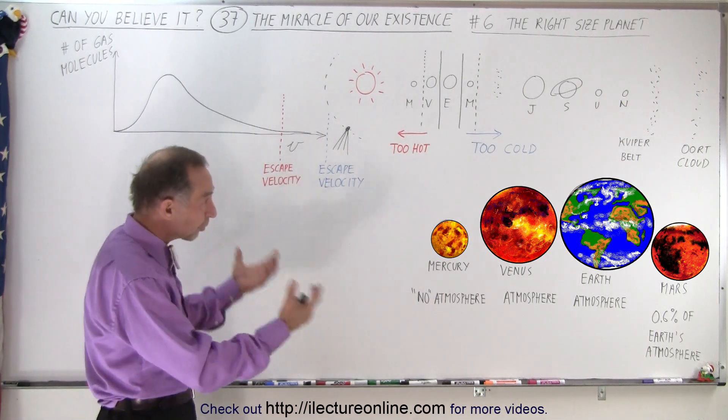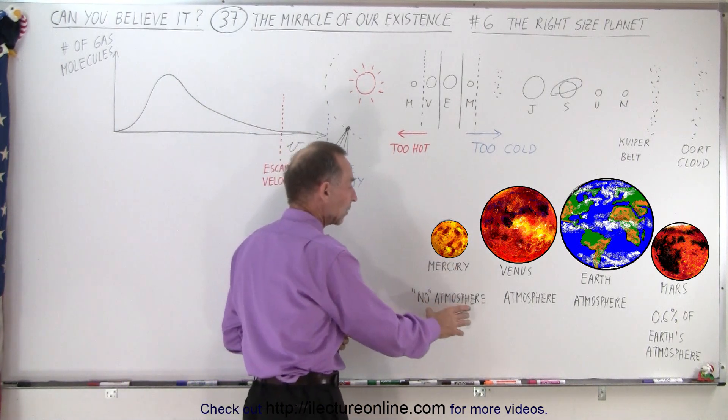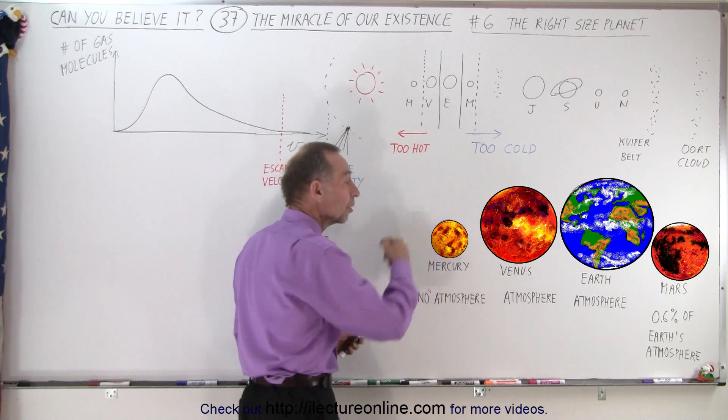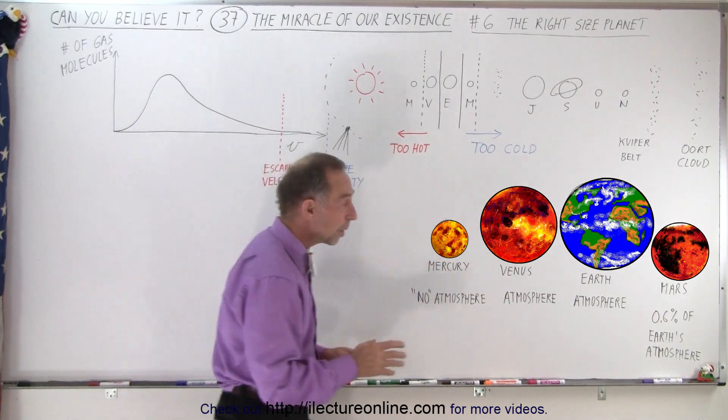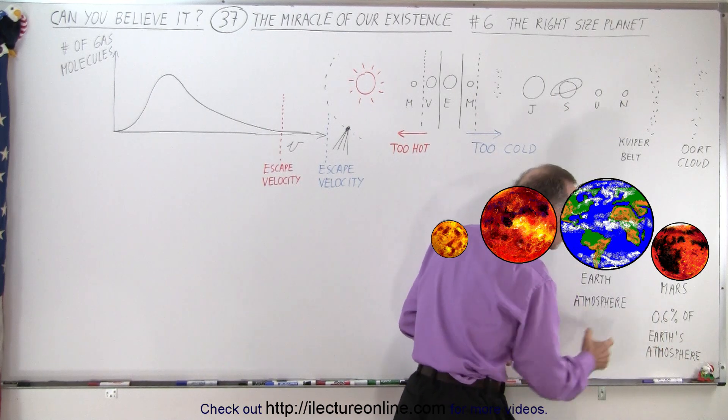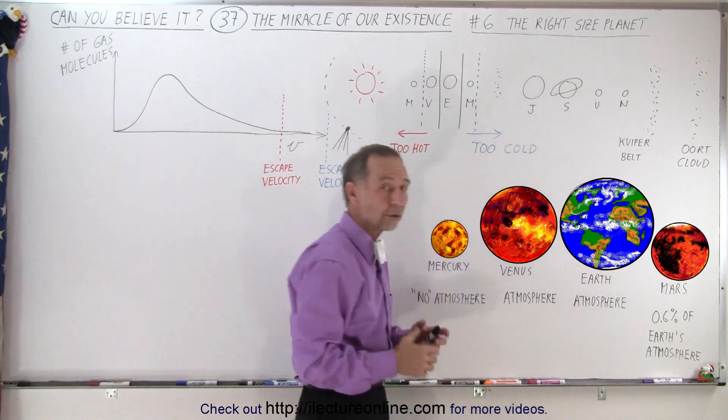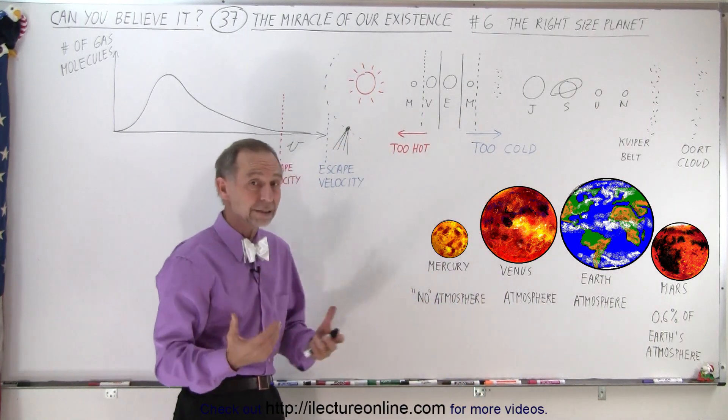So, of the four terrestrial planets in our solar system, notice that Mercury has no atmosphere, but Mercury is the smallest of all the planets. Mars has just a small amount of atmosphere left, about 0.6% of the atmospheric pressure of the Earth, and liquid water can no longer exist on the surface of Mars for any length of time.